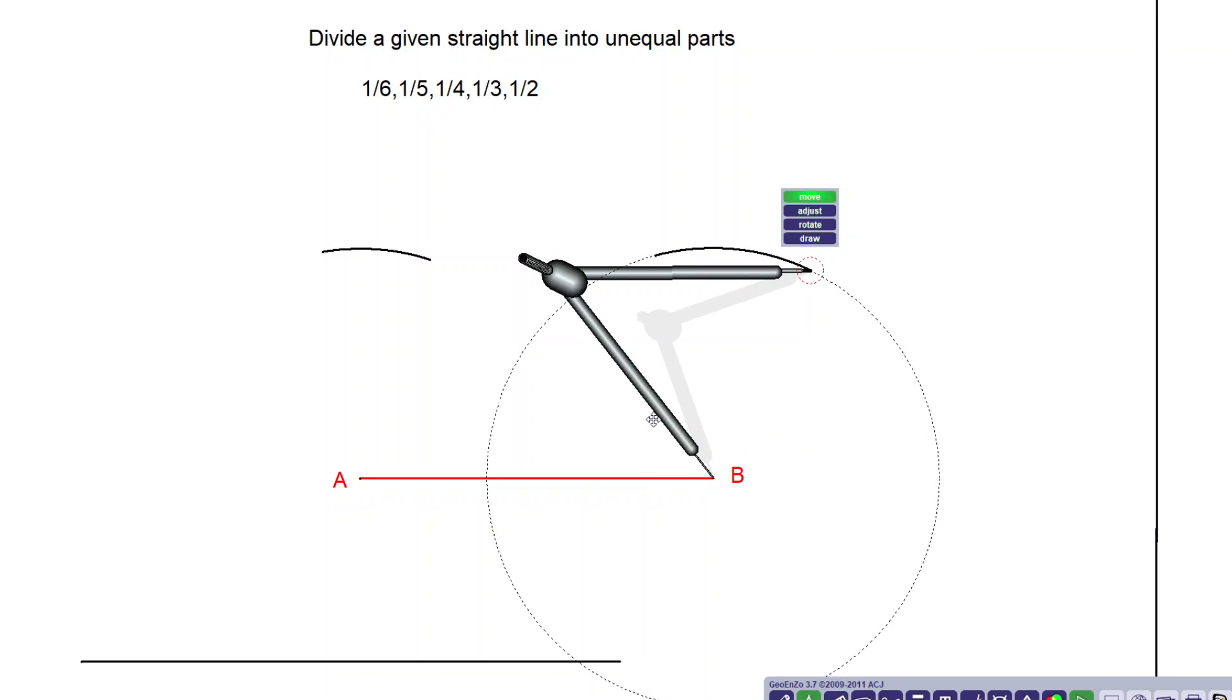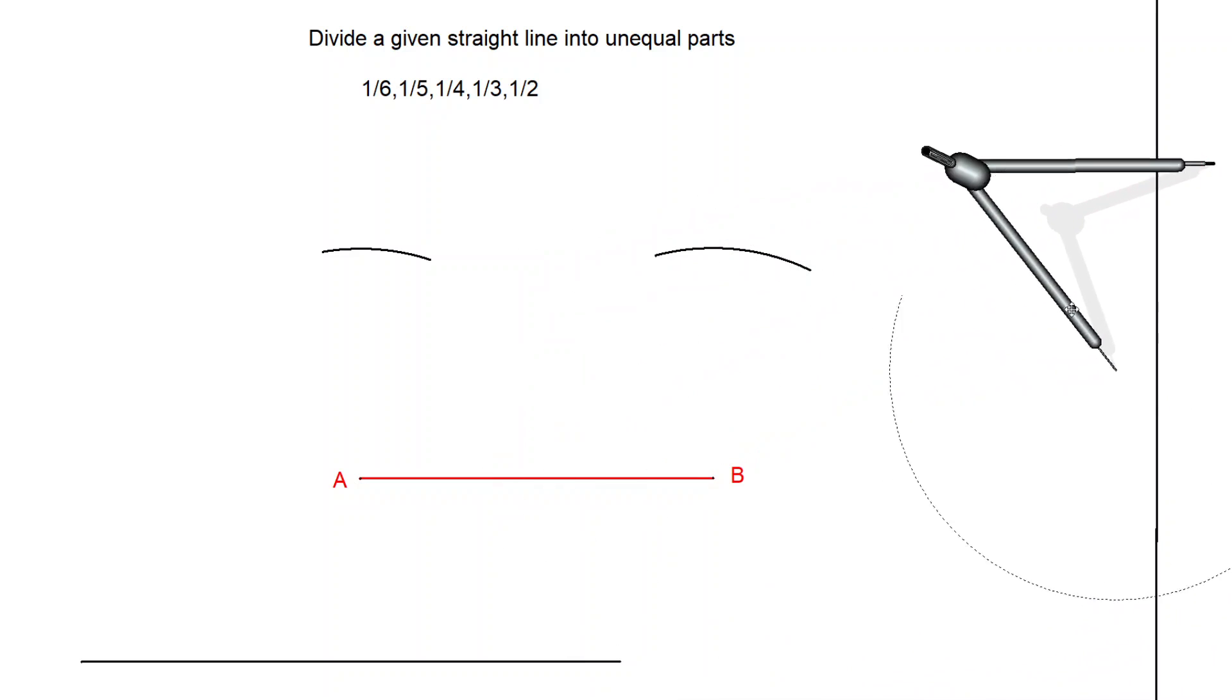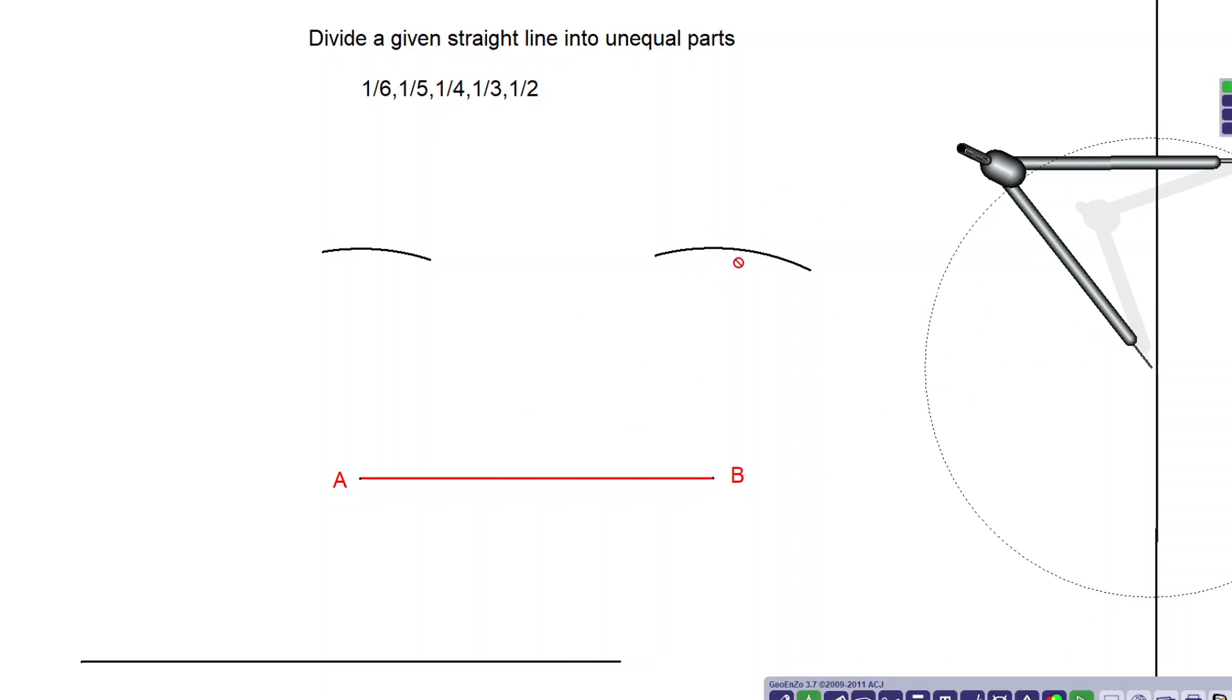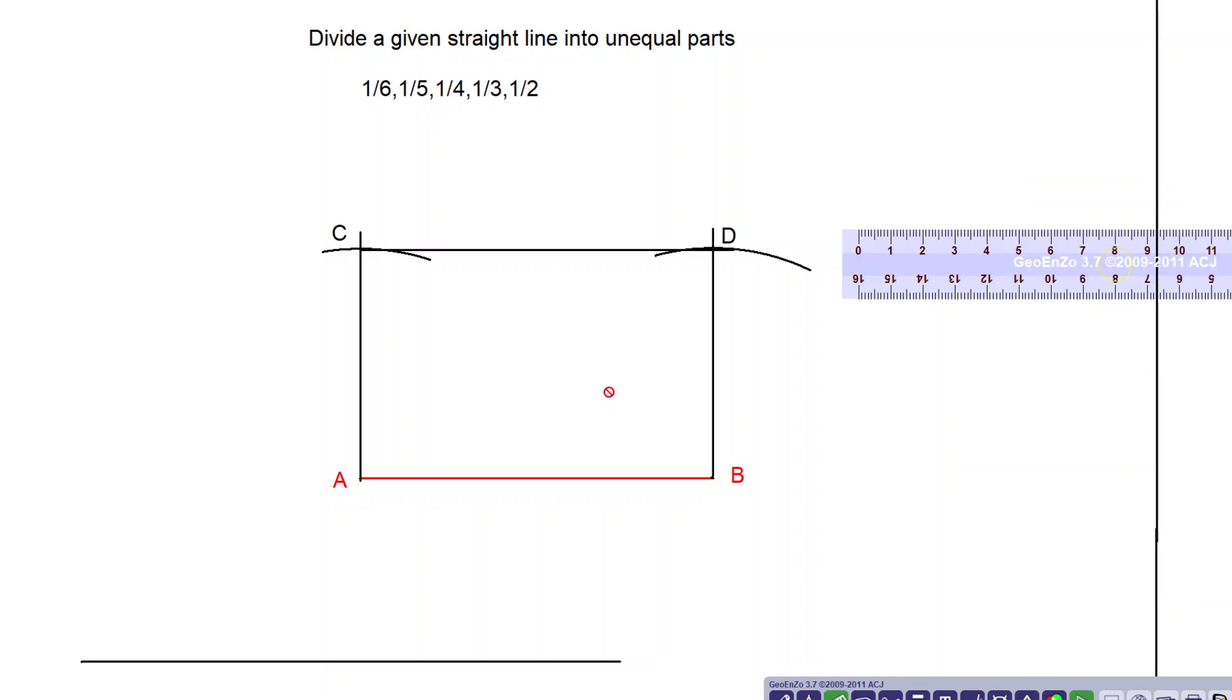Now you have to draw two perpendiculars, one at A and one at B, and we will cut these two arcs. I will draw two perpendiculars now. So here I have drawn two perpendiculars, one at A and another at B, the same distance connected then by the line.